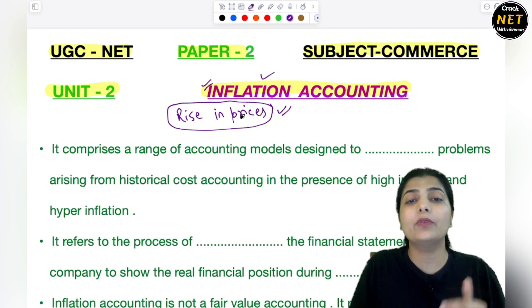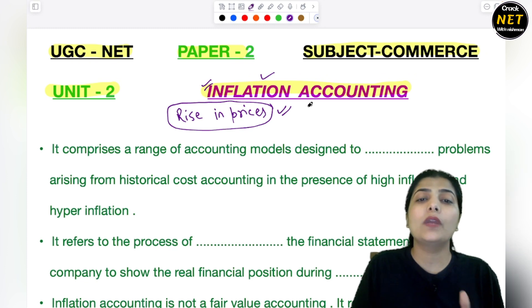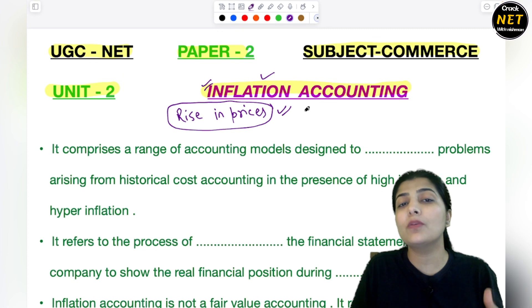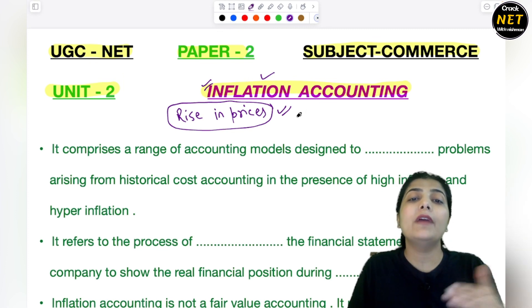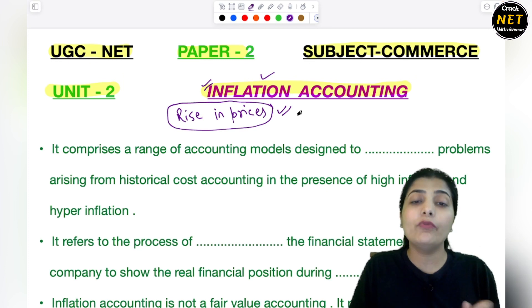This price rise means we cannot keep our assets and liabilities values the same. We need to examine them looking at future prices - that is known as inflation accounting. And why do we need to do this? Because in today's time when we have assets and liabilities, in the future period their value will be something else. So we have to know how inflation accounting affects a business organization's assets.